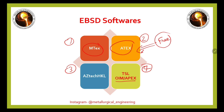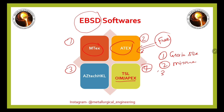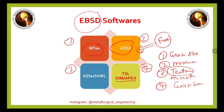What important features can you get from EBSD data analysis? You can determine grain size and grain size distribution, misorientation distribution, and most importantly, texture analysis — including micro-texture analysis. You can also get in-depth information like grain boundary characterization, to understand what kind of grain boundaries are present in your material. These EBSD software tools provide all of these features.